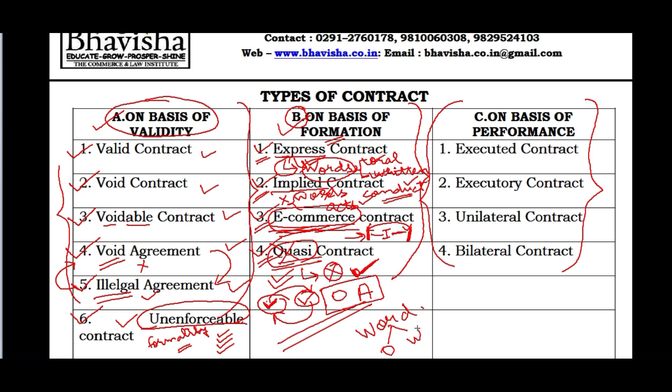Implied contracts are those where a contract is formed through conduct/gestures without words being used. The example was of a porter at a railway station: a girl gets off a train with her luggage, a porter comes, picks up her luggage and starts walking outside. This is an implied offer, and if the lady silently follows him, it is an implied acceptance - that the porter will carry her luggage and she will pay him for his services. So it is an example of an implied contract.